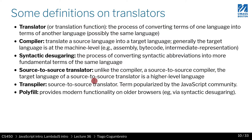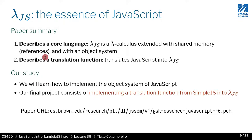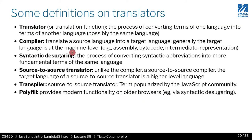Before we even start this module, I want us to focus on a few definitions, just to make sure everyone is on the same page. We're going to learn this translation function, which is another fancy way of saying a compiler, or a source-to-source compiler, or a source-to-source translator. All of these things are more or less the same thing. A translator or translation function is the process of converting terms from one language into another. It could be the same language — transforming terms of one language into the same language as well.